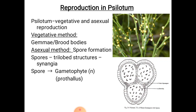The asexual method takes place by formation of spores. The spores are produced in trilobed structures called synangia, which are borne in the axils of bifid fertile scale leaves at the tips of aerial branches. The development of the sporangium is eusporangiate type, that is, the sporangium develops from a group of cells. The mature sporangium dehisces and the spores are dispersed by wind. These haploid spores germinate into haploid gametophyte.